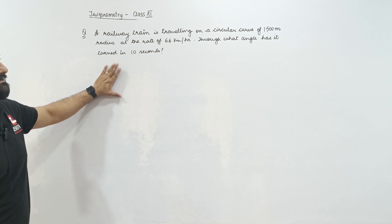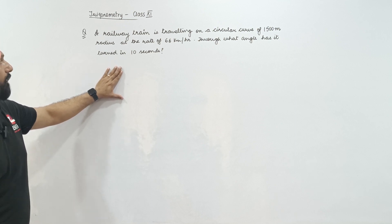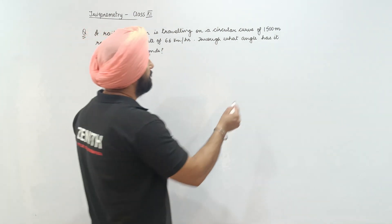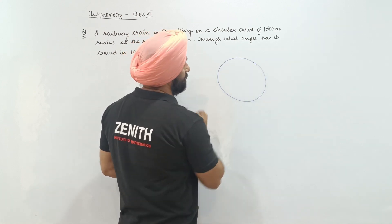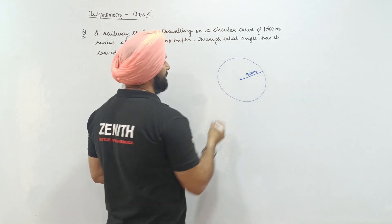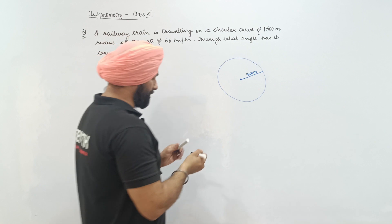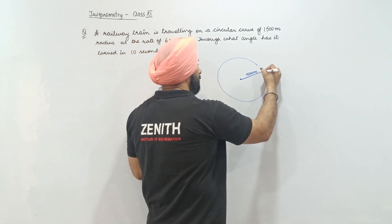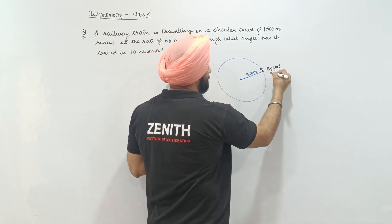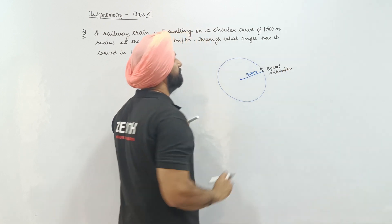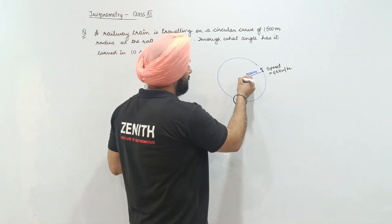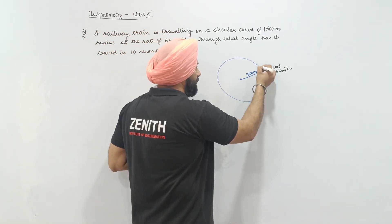A railway train is traveling on a circular curve of 1500 meter radius at the rate of 66 km per hour. This circular curve has a radius of 1500 meters and the train is traveling — through what angle has it turned in 10 seconds? Let's suppose this train is here, 10 seconds later.